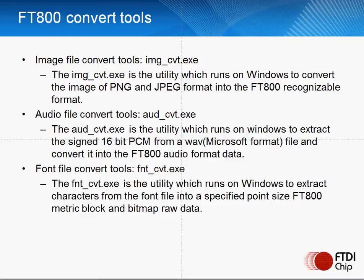The image conversion utility provides images that are accessible by the FT800, converting from an existing format into something the FT800 may read. Similarly, the audio conversion utility allows audio files to be converted from a WAV format into a signed 16-bit PCM that the FT800 can understand. With the font utility, this allows users to create a user-defined font for displaying characters and symbols not available in the default fonts supplied by the FT800.